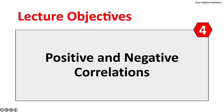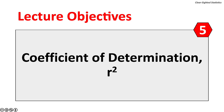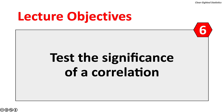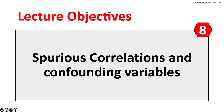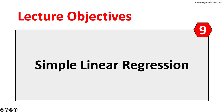Fourth, positive and negative, or inverse, correlations will be defined. Fifth, the calculation and interpretation of the Coefficient of Determination, or R-squared, will be explained. Sixth, the significance of a correlation will be tested. Seventh, the difference between correlation and causation will be discussed. Eighth, spurious correlations and confounding variables will be explained. Ninth, a linear regression analysis will be conducted.